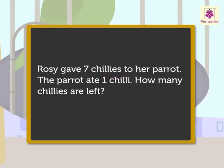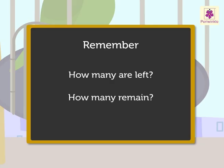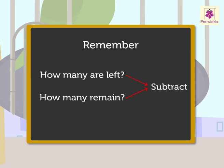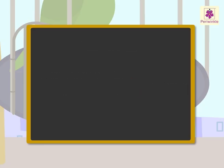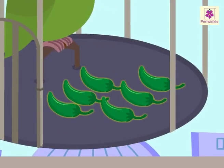Now, let us see what we have to find out. How many chilies are left? Remember, when the words 'how many are left' or 'how many remain' come in the story, then we have to subtract the numbers given in the information. So, we subtract: seven chilies minus one chili is equal to six chilies. There are six chilies left.